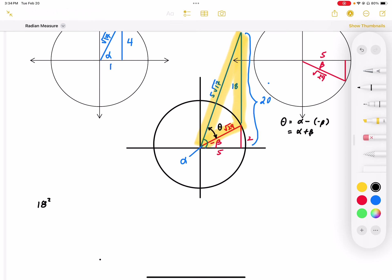So we end up with 18 squared, or a squared, equals b squared—so root 29 squared—plus c squared, which is 5 root 17, minus 2bc cosine of angle theta. And what we're going to do is rearrange this and solve for cosine of angle theta. So cosine theta equals 18 squared minus root 29 squared minus 5 root 17 squared, all over negative 2 root 29 times 5 root 17.